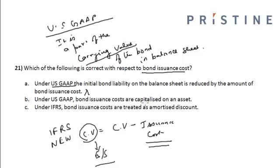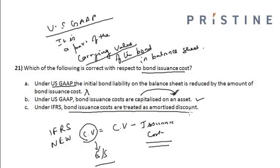Under US GAAP, the bond issuance costs are capitalized on the asset. This option is correct because it is a part of the carrying value of the bond and it is amortized or capitalized on the asset. Under IFRS, the bond issuance costs are not treated as an amortized discount; rather, they are netted out against the carrying value of the bond. So option B is the correct option.